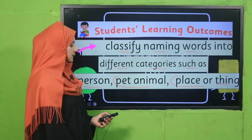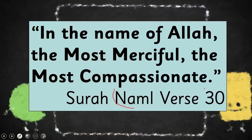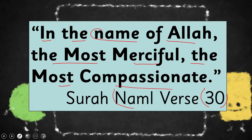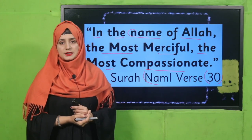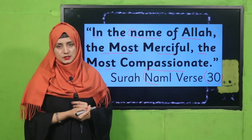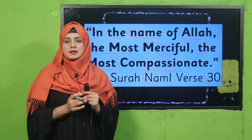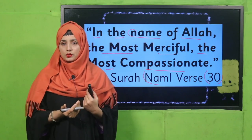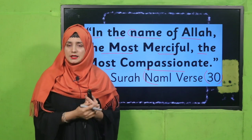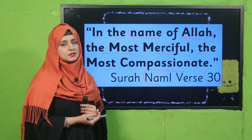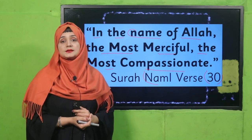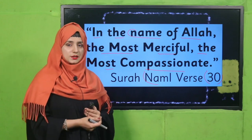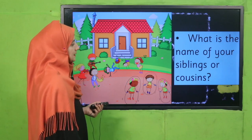My dear students and teachers, Allah Subhanahu wa Ta'ala is the most compassionate. This beautiful verse tells us about the attributes of Almighty Allah — His names and how He is: Allah is the Most Merciful, meaning He has a lot of mercy, and He will show us mercy in every step of life. He is Most Compassionate and very kind to us. These are the qualities and names of Almighty Allah. Our today's lecture is also about naming words, so let's move towards our lecture.